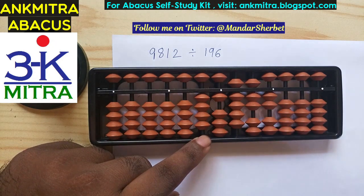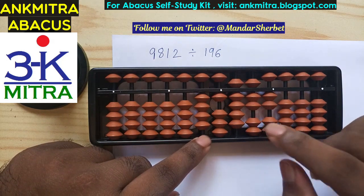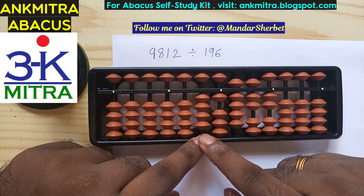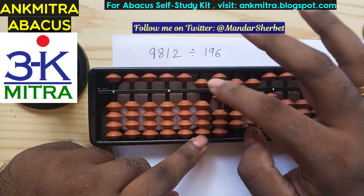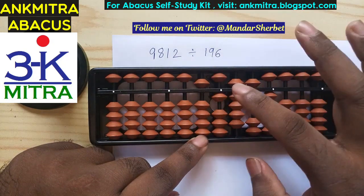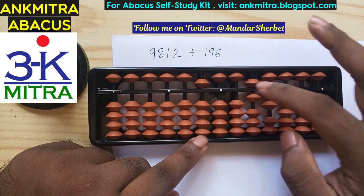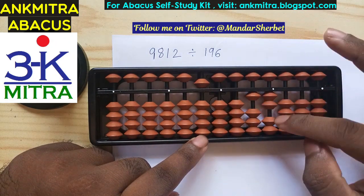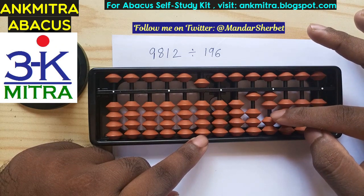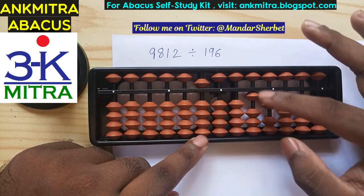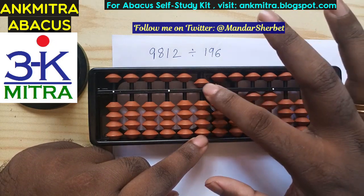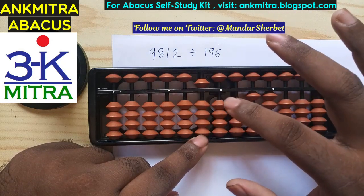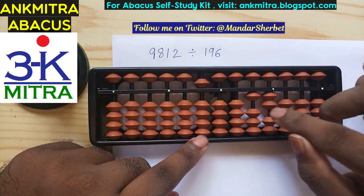We can subtract 196 one more time from these three rods. I'll add one on the tens place of the answer set — for adding one it will be plus five minus four — and then subtract 196 from these rods: 190 and six. Now we can move to the next rod since we only have 12 left. We can stop here. The answer is quotient 50 and remainder 12.